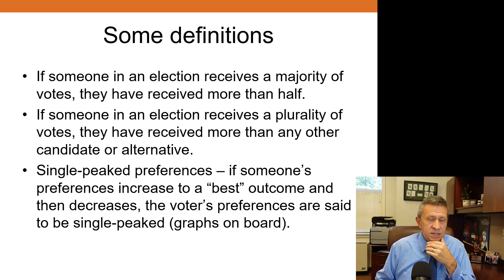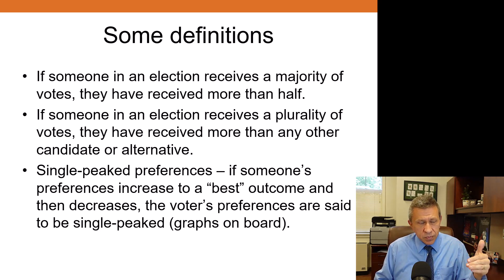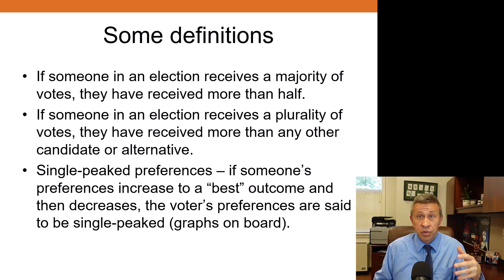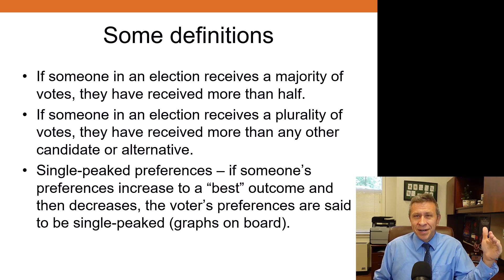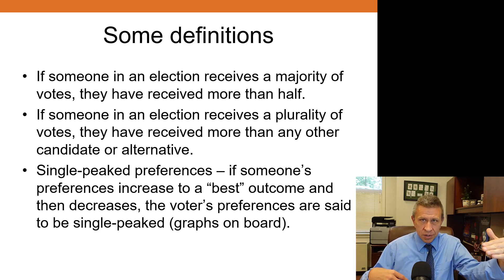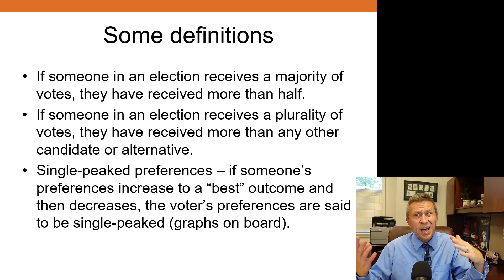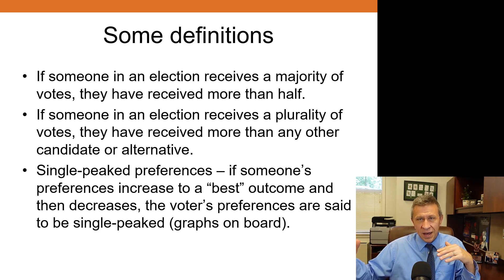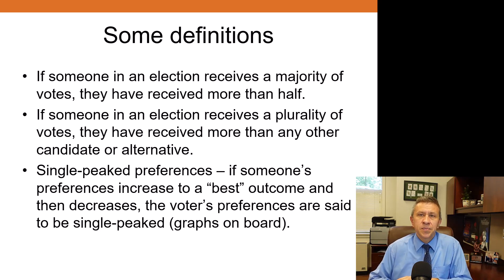A counter-example: same party scenario where $200 is best. After $200, spending $201, $202, $203 is all worthless — but maybe you could hire a musician for an extra $300 for the evening, so the next best is $500. That would be double peaked: $200 is best, then it's worse until you get to $500, and $500 is better than $499 or $498, and $501 or $502 is worse.